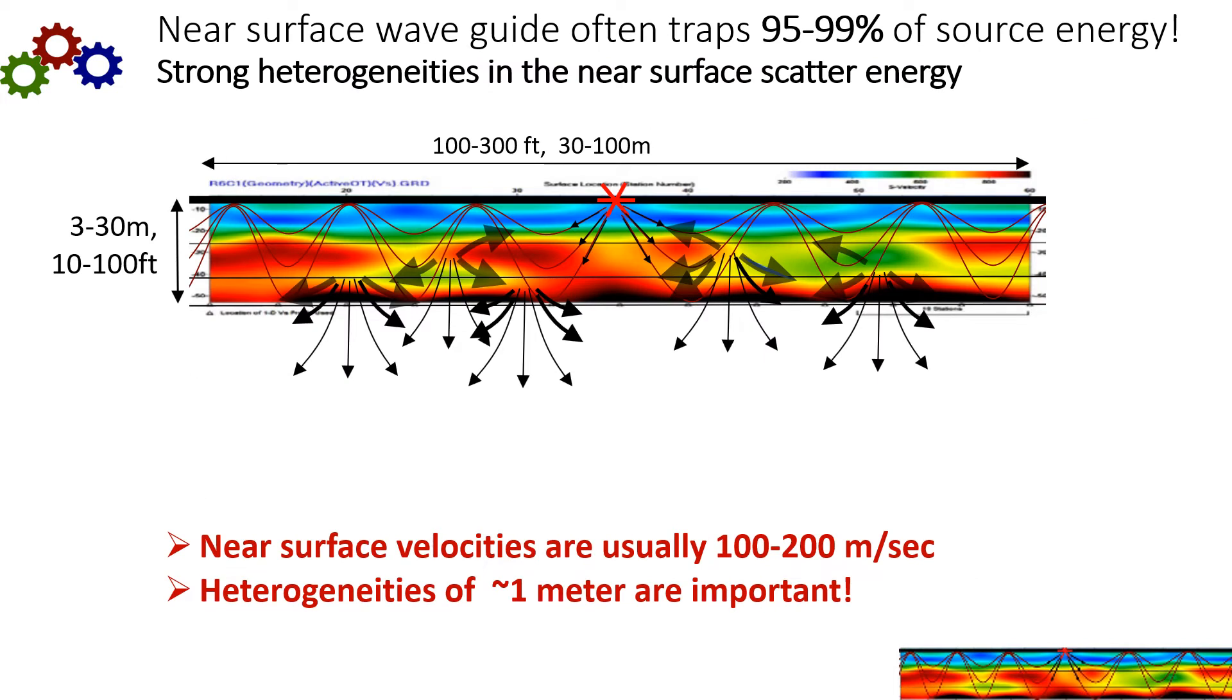This diagram shows how scattering can create so much noise. Now, the scale here is very small. This is only three to 30 meters deep and 30 to 100 meters across. So this is very much just the thin near surface.